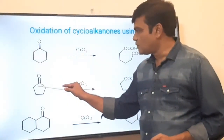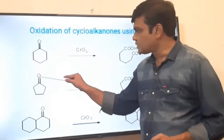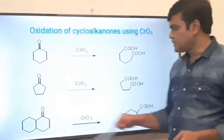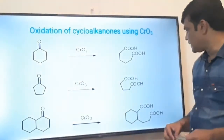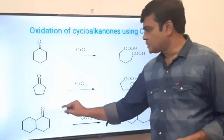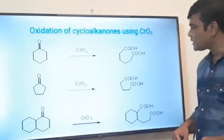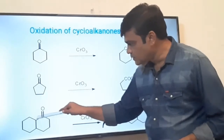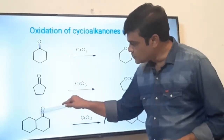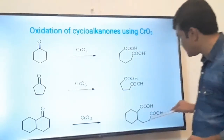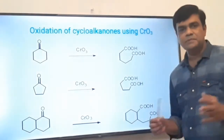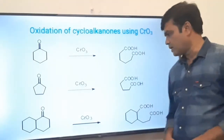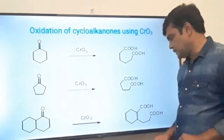In this way a ring-opening reaction takes place and we get a dicarboxylic acid. Selectivity is important — the ring opening takes place from the less substituted side. The alpha carbon on the less substituted side is oxidized to COOH; the other alpha carbon is also oxidized to COOH, giving the dicarboxylic acid. Simply, the carbon-carbon bond cleavage between the carbonyl carbon and the alpha carbon gives the dicarboxylic acid.